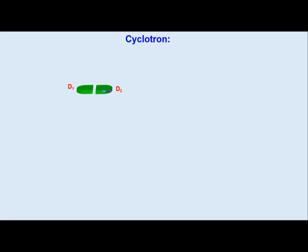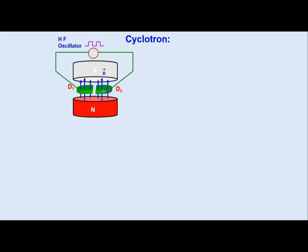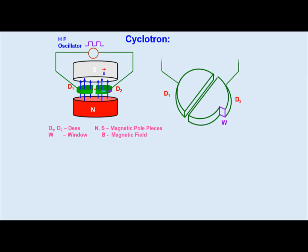It consists of two D's basically which are placed between two heavy pole pieces, north pole and south pole, creating the magnetic field passing through these D's. This D is connected with a high frequency oscillator. When any charged particle enters through the D, due to the presence of magnetic field, it starts helical motion, circular motion.